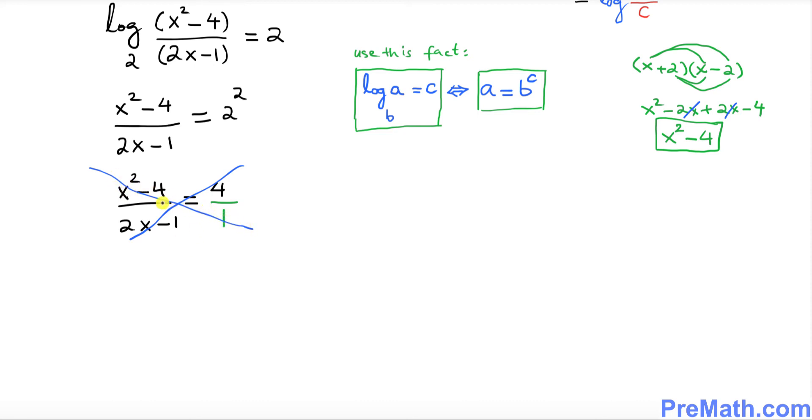If you use that one, if you go this way, 1 times X squared minus 4 is same as X squared minus 4. And if you go the other way around, 4 times 2X minus 1 becomes 4 times 2X is 8X minus 1 times 4 is negative 4.